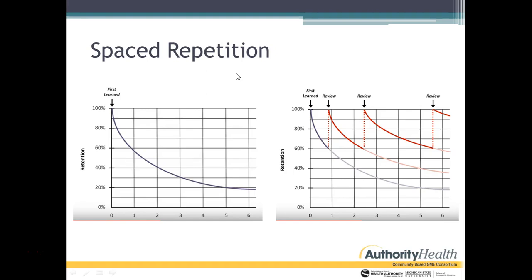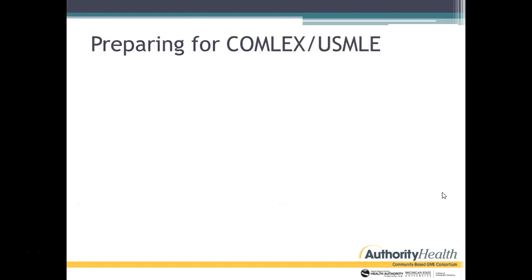Spaced repetition: if you only study something once, you're not going to retain it very much. If you study something and then review it over time, that's spaced repetition. For example, you learn something on Monday, review it Wednesday, Saturday, and then again the following week. However you do it, you have to go back and retrieve the information, otherwise you won't retain it well over time.